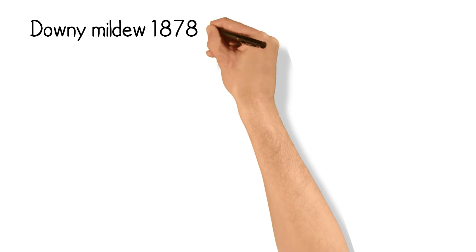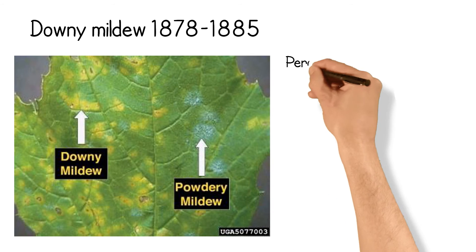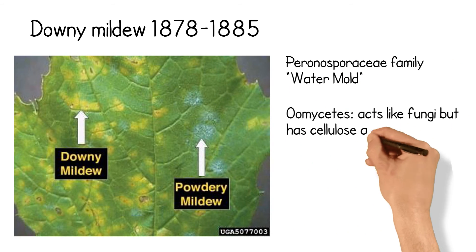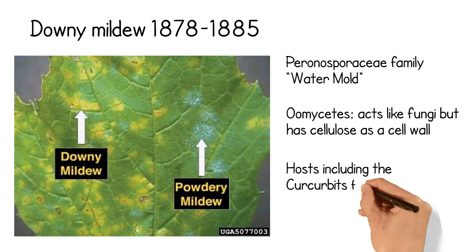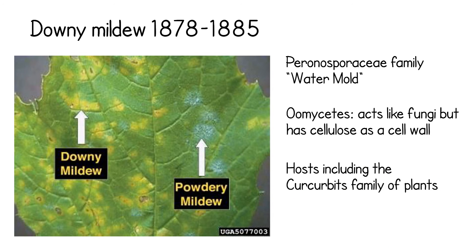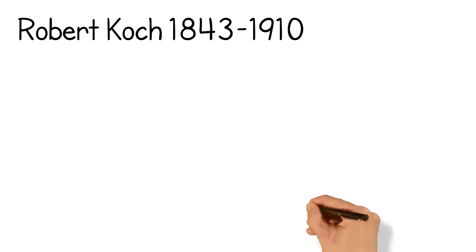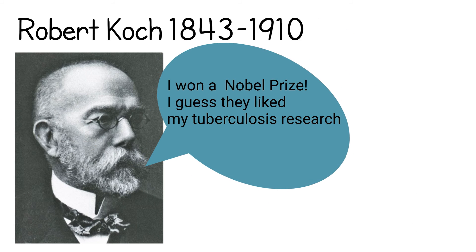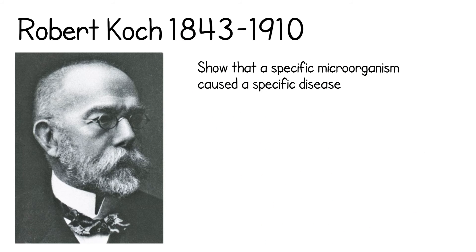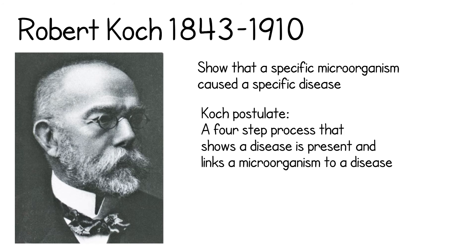Downy Mildew, 1878–1885. This oomycete disease caused a grape epidemic in France. The disease has a wide variety of hosts, including the cucurbit family of plants. Robert Koch, 1843–1910. In 1879, germ theory was established and spontaneous generation was disproved. While working with anthrax and isolating the bacterium, Koch showed that a specific microorganism caused a specific disease. Koch's postulate establishes a method to test if a plant is under the effect of a disease or an environmental condition.